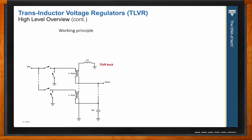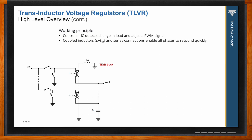How the TLVR converter works: a controller IC detects a change in the load and adjusts the PWM signal accordingly — standard behavior. What makes the TLVR special is that the arrangement of coupled inductors and series connections enables all phases to respond quickly. When a load imbalance is detected, the secondary windings all act like voltage sources that help induce supporting currents in the primaries. The slew rate is largely set with the tuning inductor Lc.